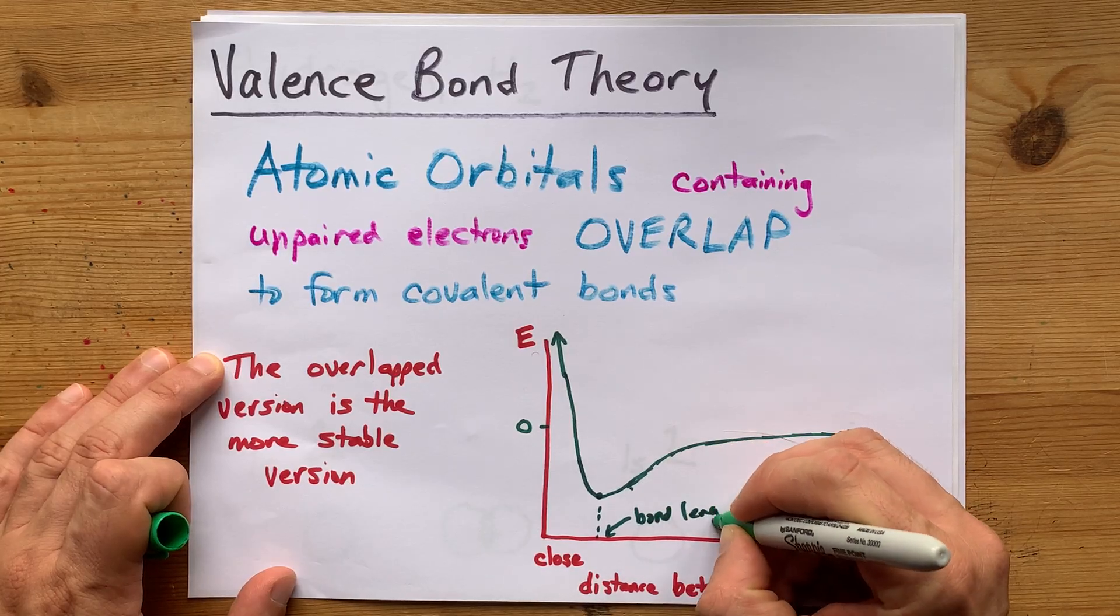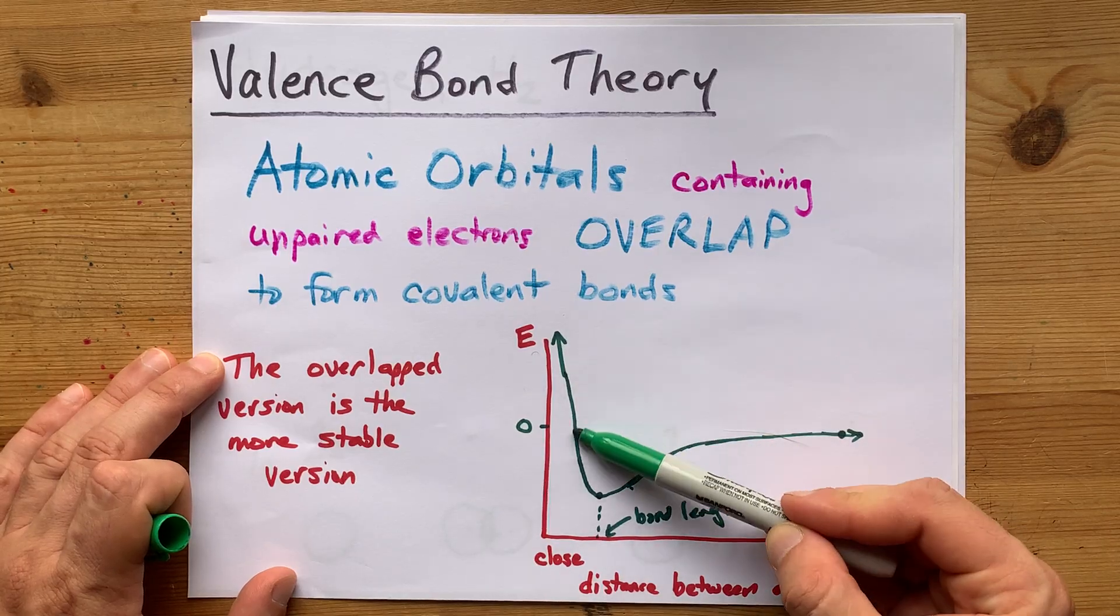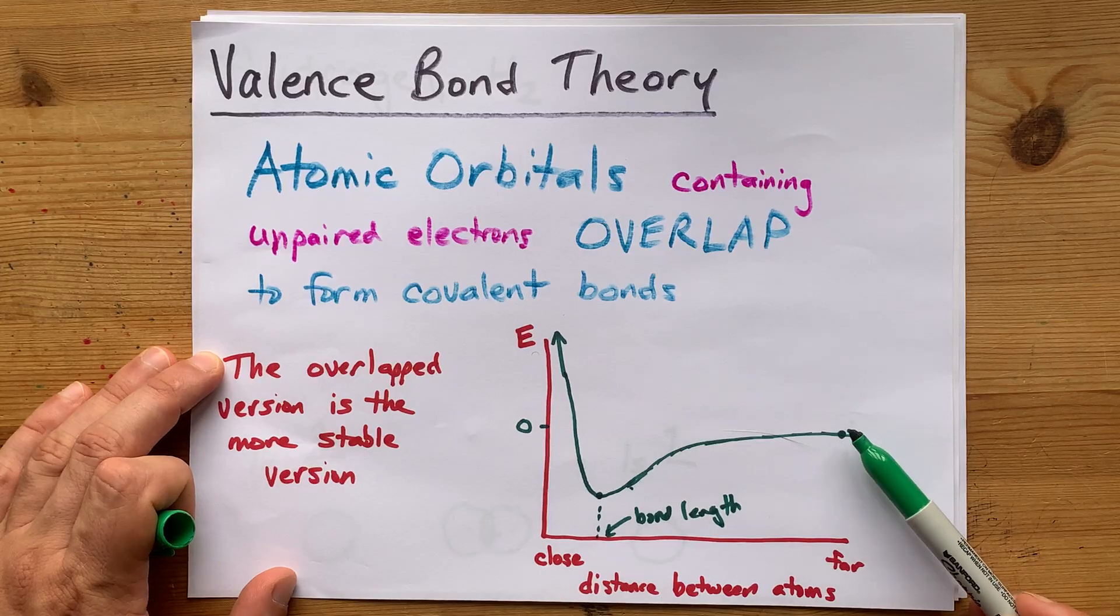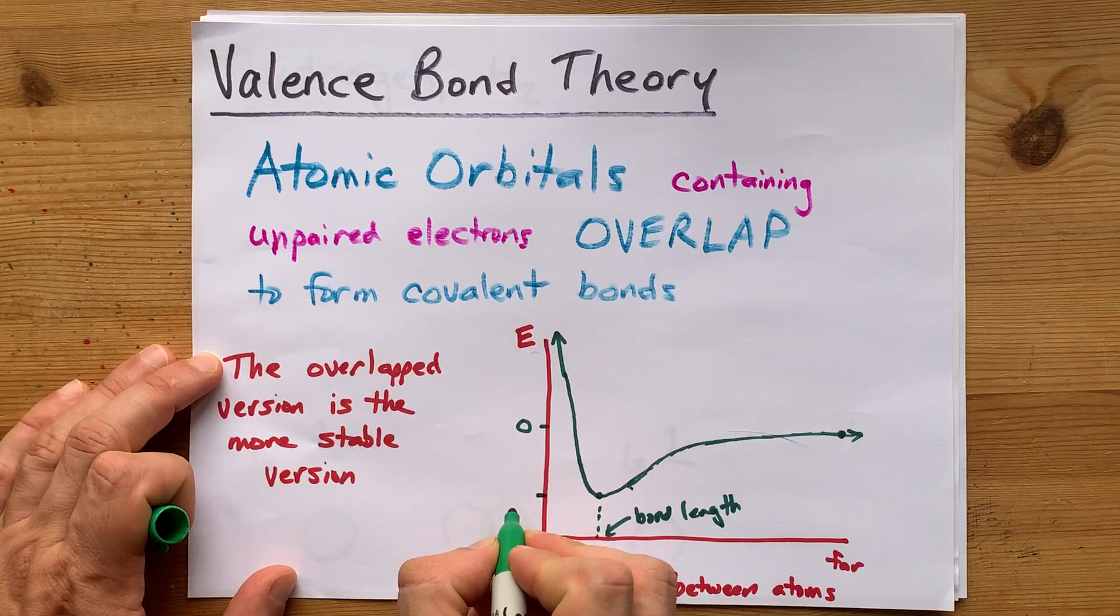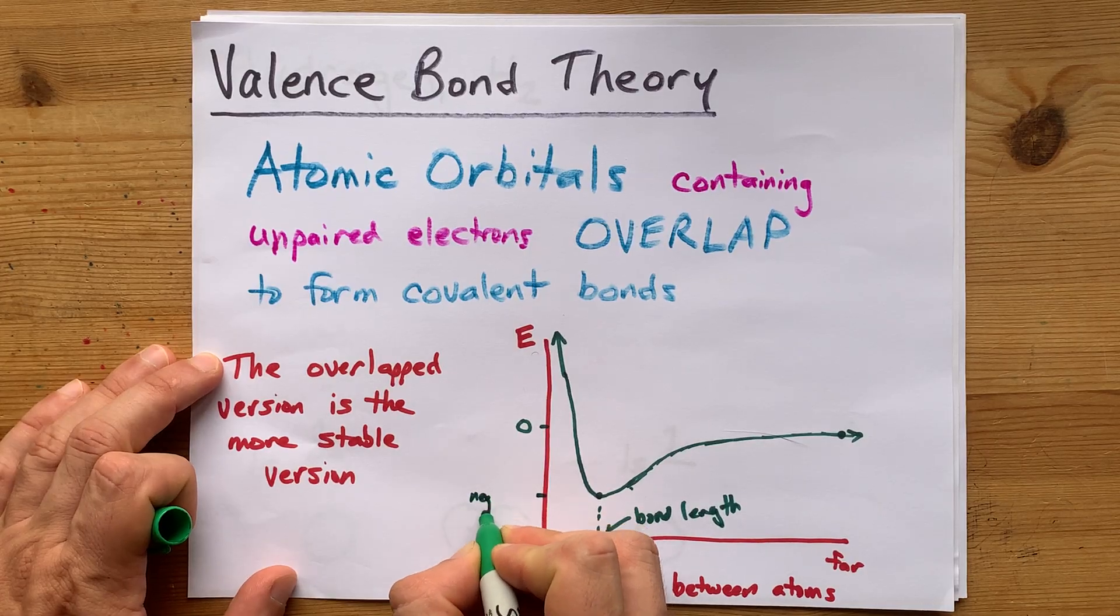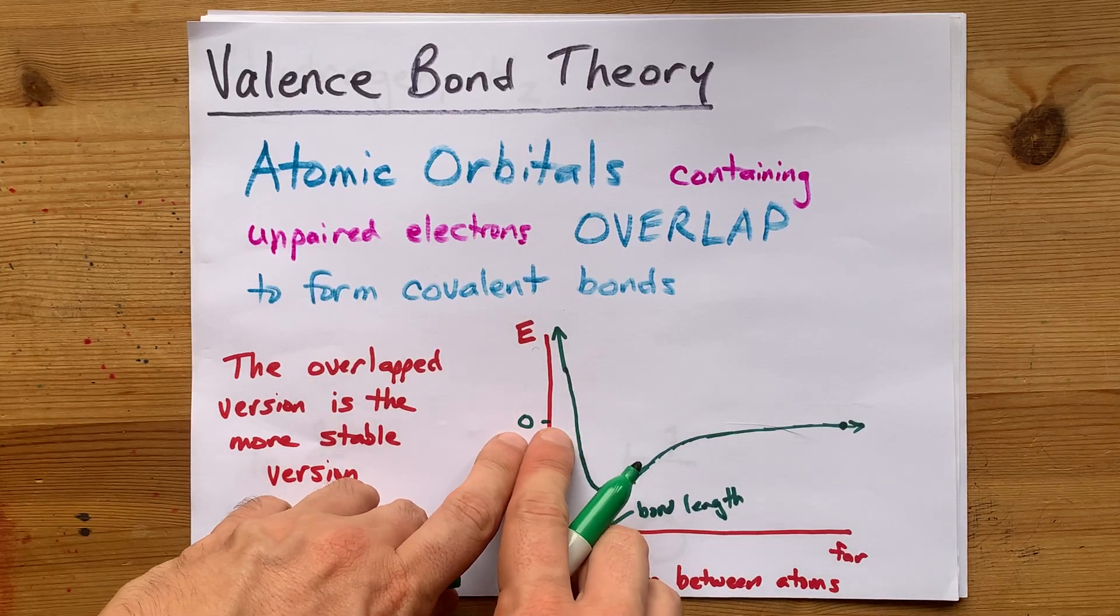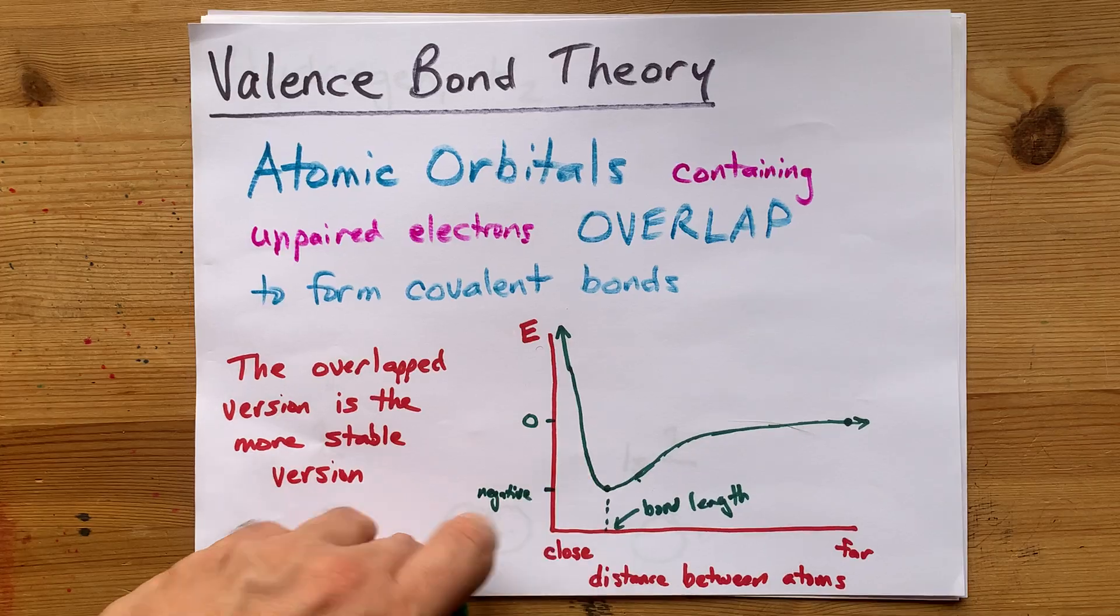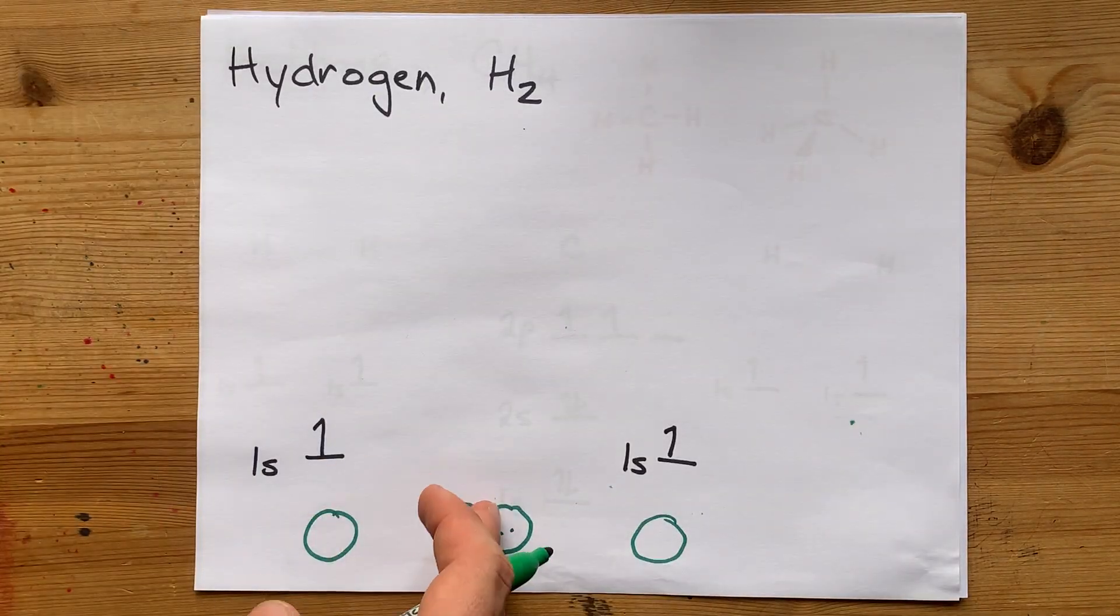This is just an energy diagram showing that if the two atoms get too close together, it's not energetically favorable. If they're too far apart, they don't interact at all. And there's some amount of energy, a negative amount of energy, or rather, relative to their original states, you're giving off energy or becoming more stable when the two nuclei are the bond length apart from each other.